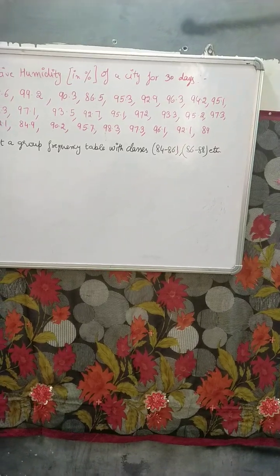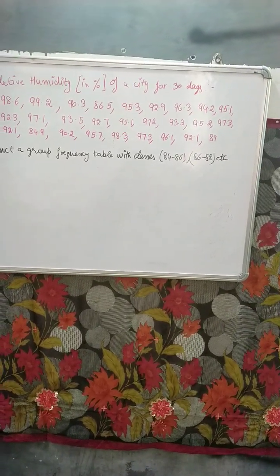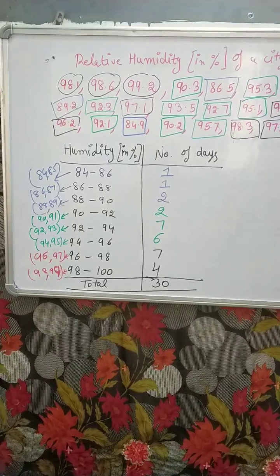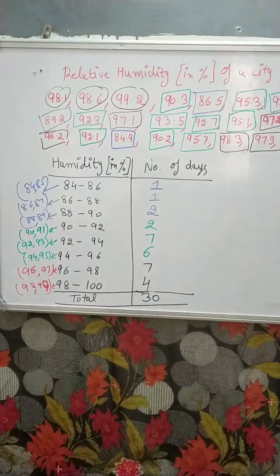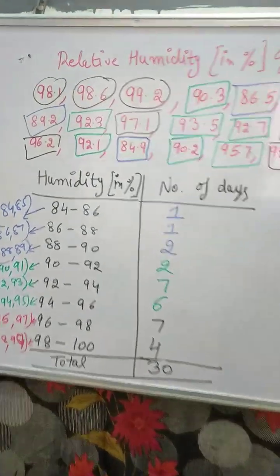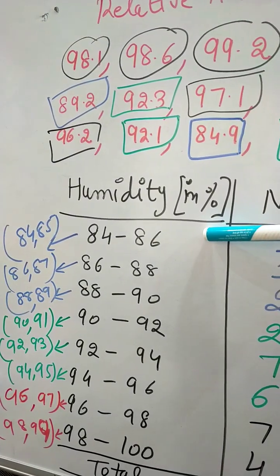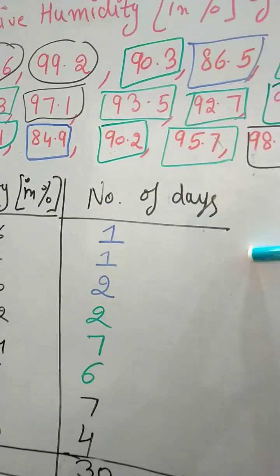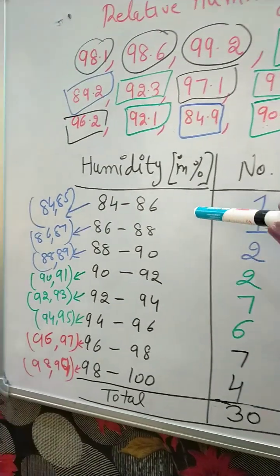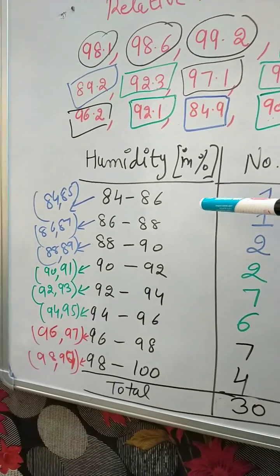84 to 86 and 86 to 88. Let's start. This is the frequency table for humidity. The first column is for humidity in percent, the second is number of days - in how many days humidity remains. Now 84...